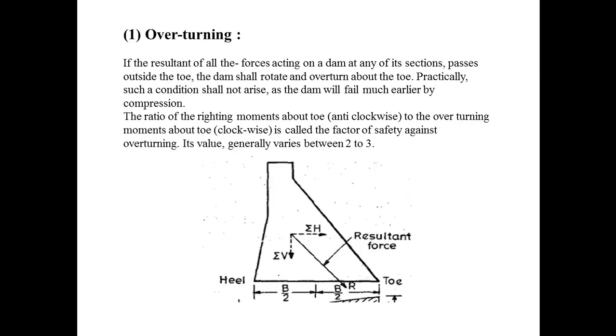The ratio of righting moment about the toe, that is anti-clockwise, to the overturning moment about the toe, that is clockwise, is called the factor of safety against overturning. The factor of safety against overturning generally varies between two to three.